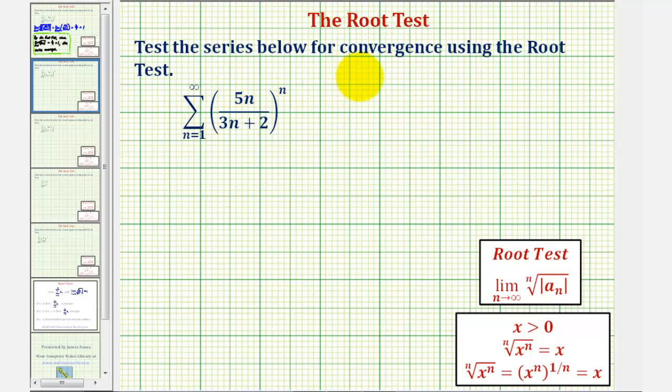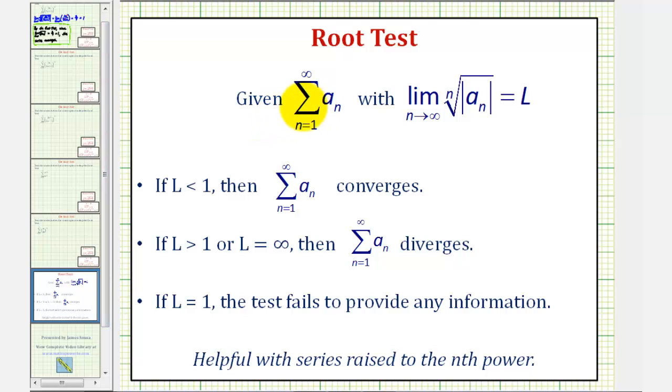We want to test the series below for convergence using the root test. To apply the root test given the summation of a sub n, we take the limit as n approaches infinity of the nth root of the absolute value of a sub n, which will equal L. If L is less than one, then the series converges.